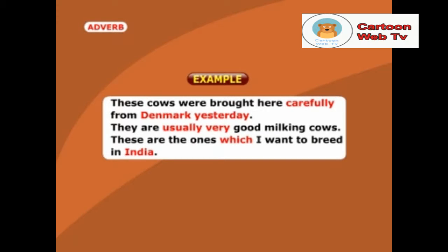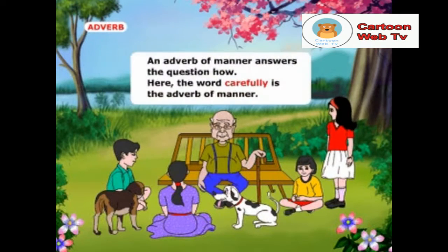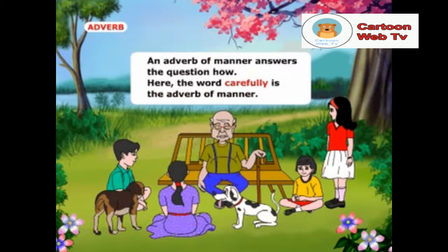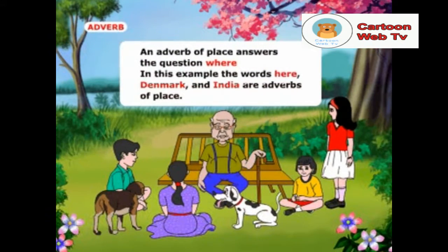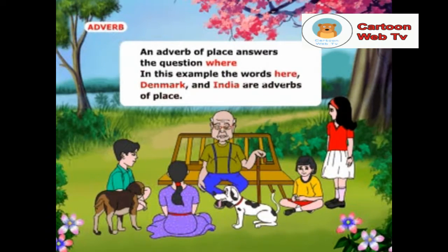These are the ones which I want to breed in India. An adverb of manner answers the question how. Here, the word carefully is the adverb of manner. An adverb of place answers the question where. In this example, the words here, Denmark and India are adverbs of place.